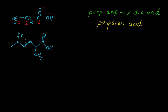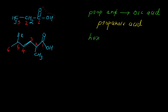While giving the IUPAC name of this compound, we must start the numbering from the carbon of the carboxyl group. So this becomes 1, 2, 3, 4, 5, and 6. We have 6 carbon atoms, therefore 'hex' will be the prefix.